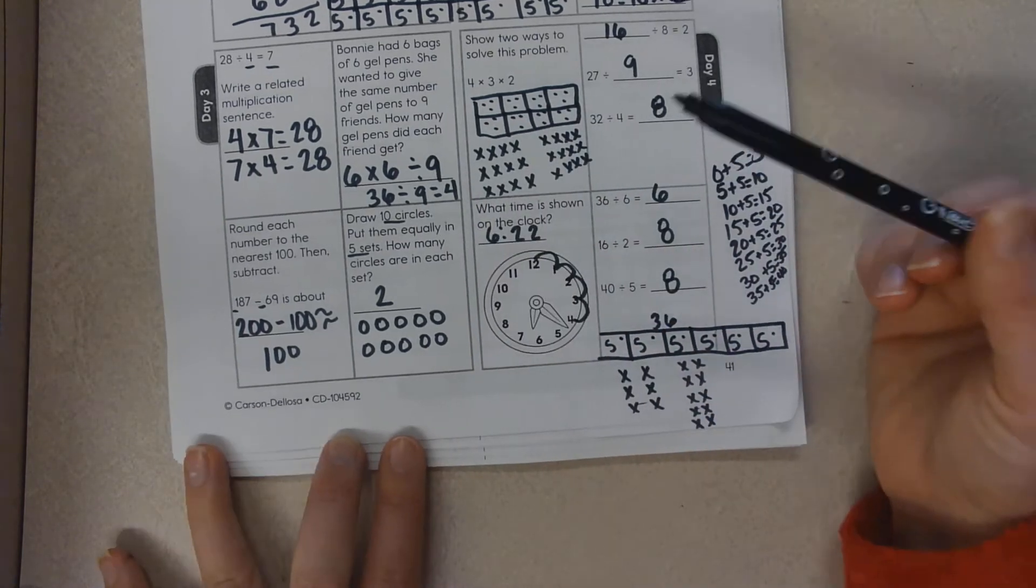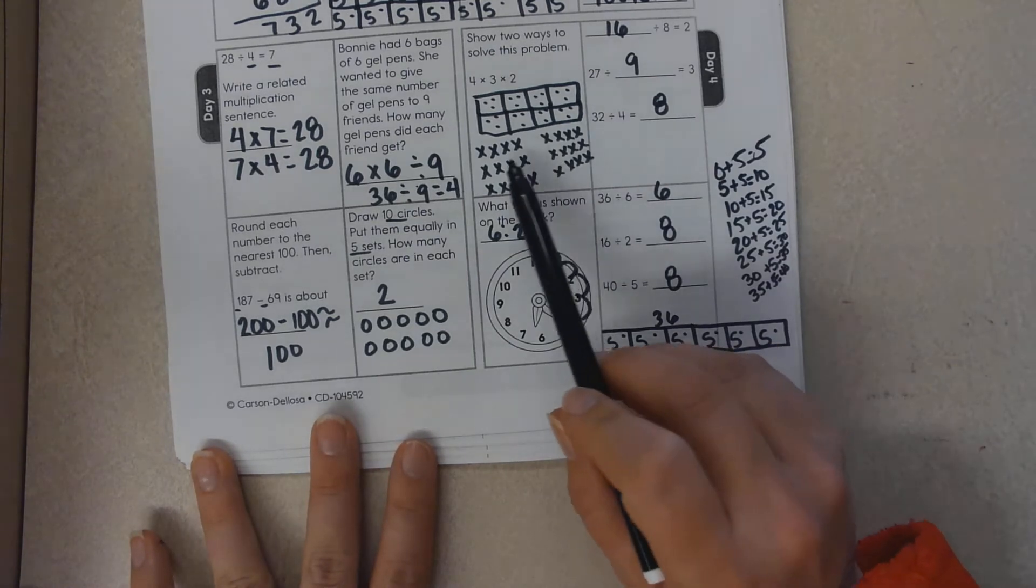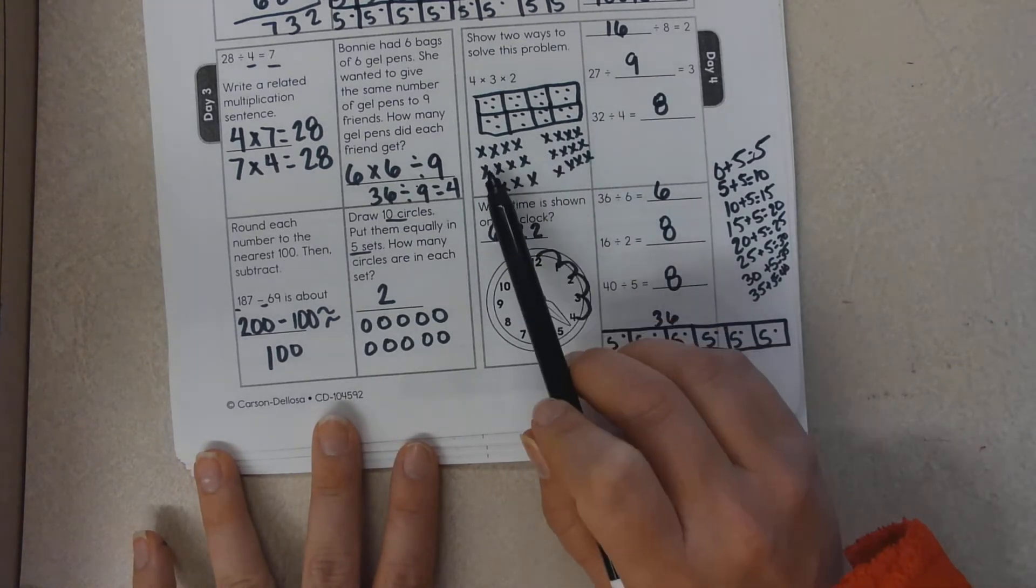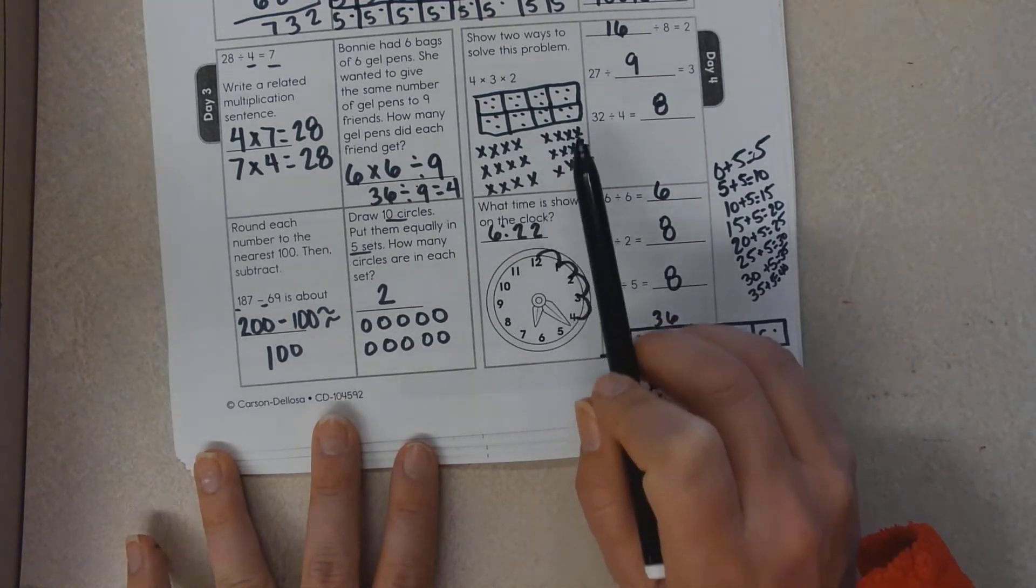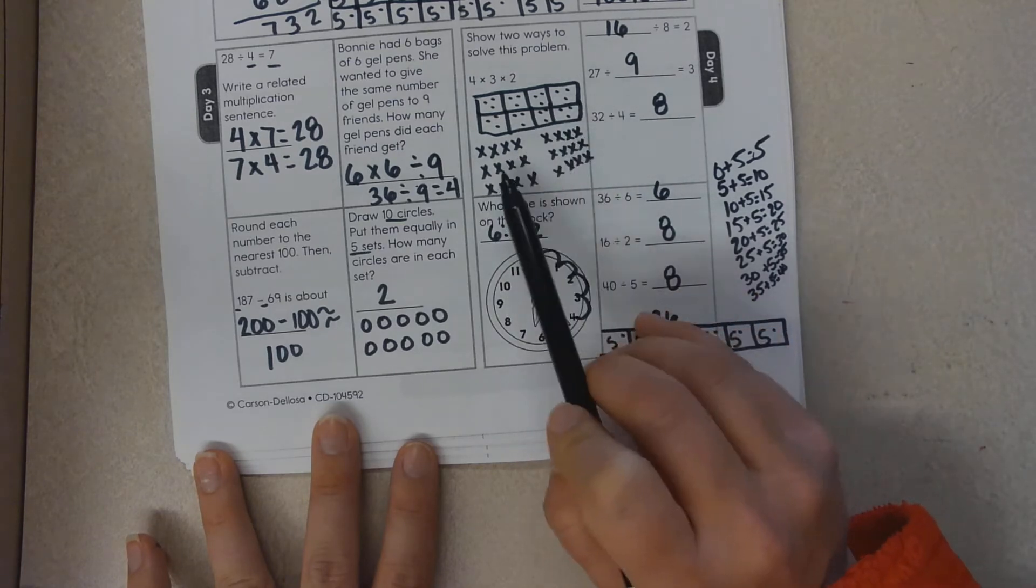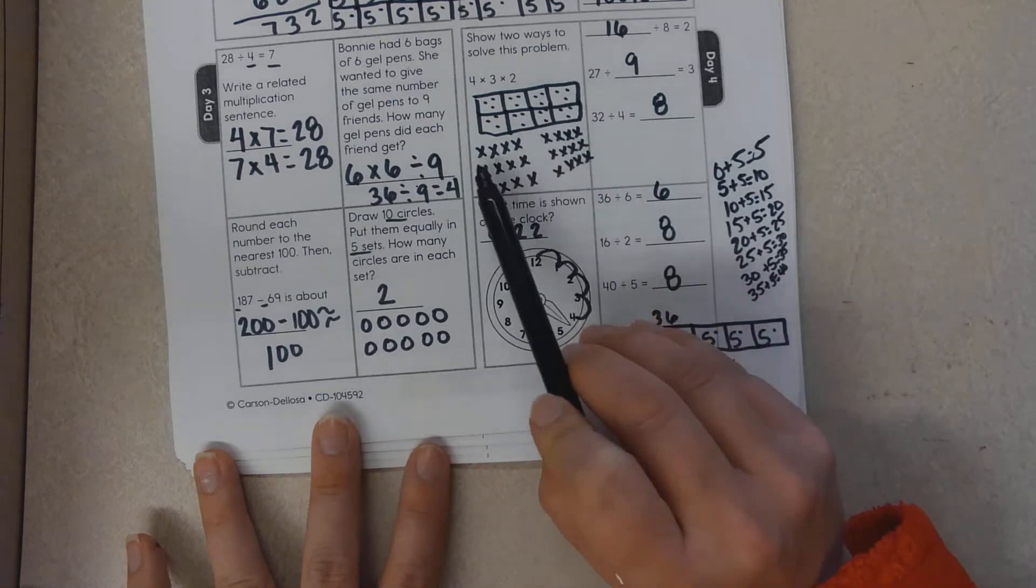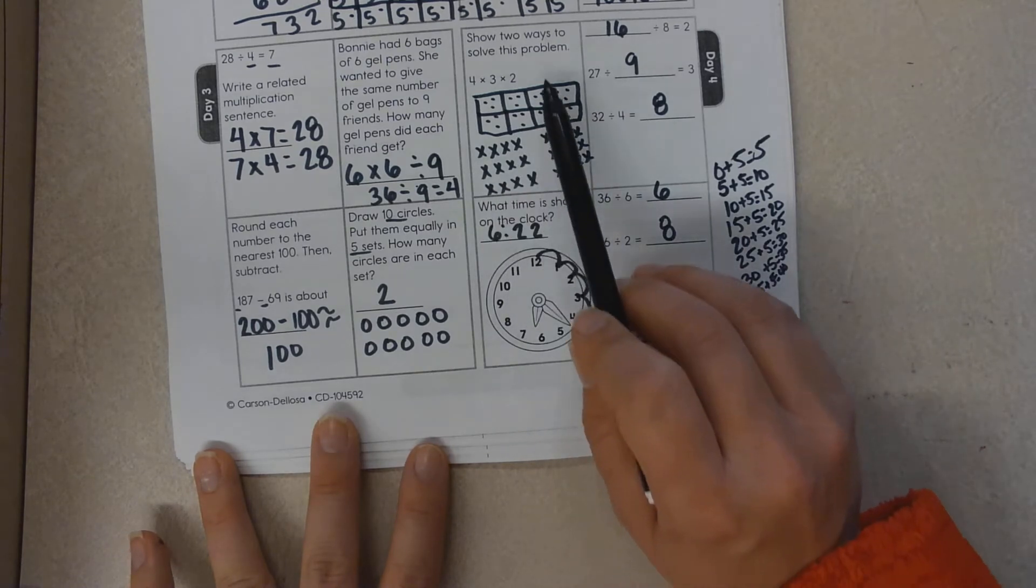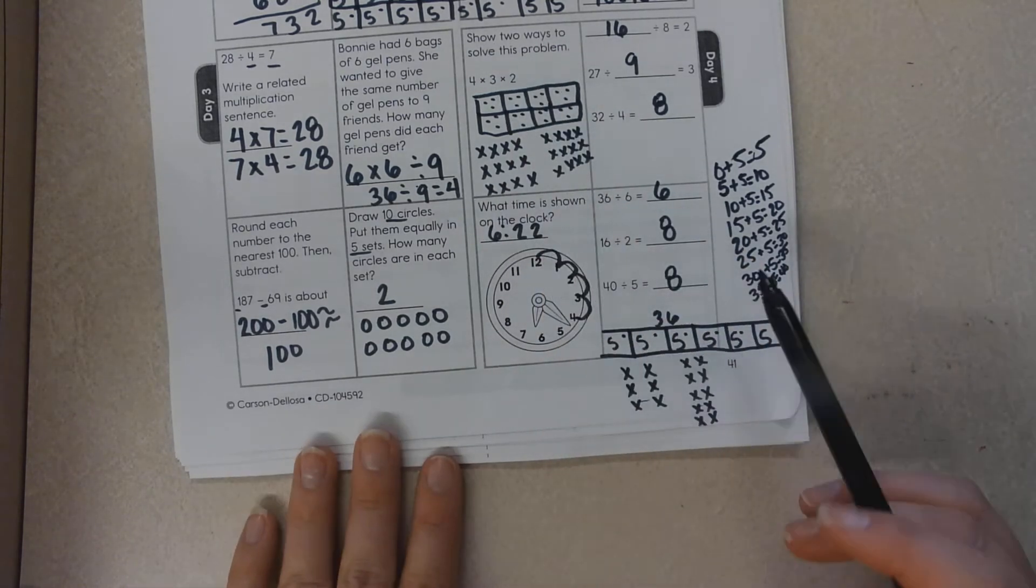Another way to solve this is to draw an array. So I did four three times and then I did it another group time, so times two. There's two sets of these. And that is how I showed two ways to solve this one problem.